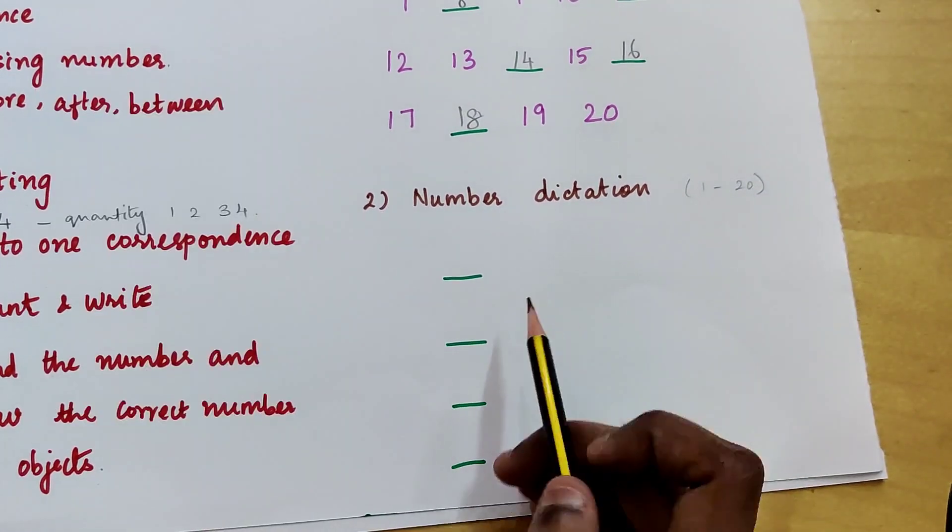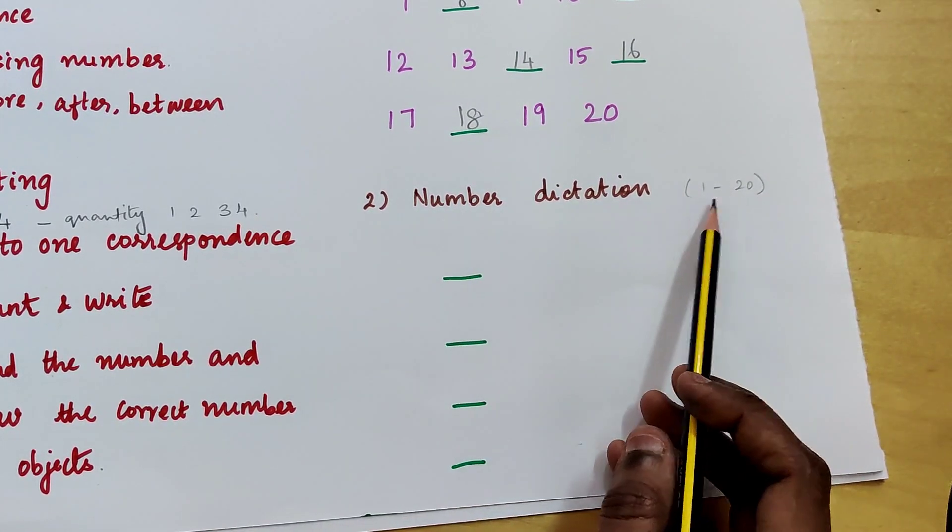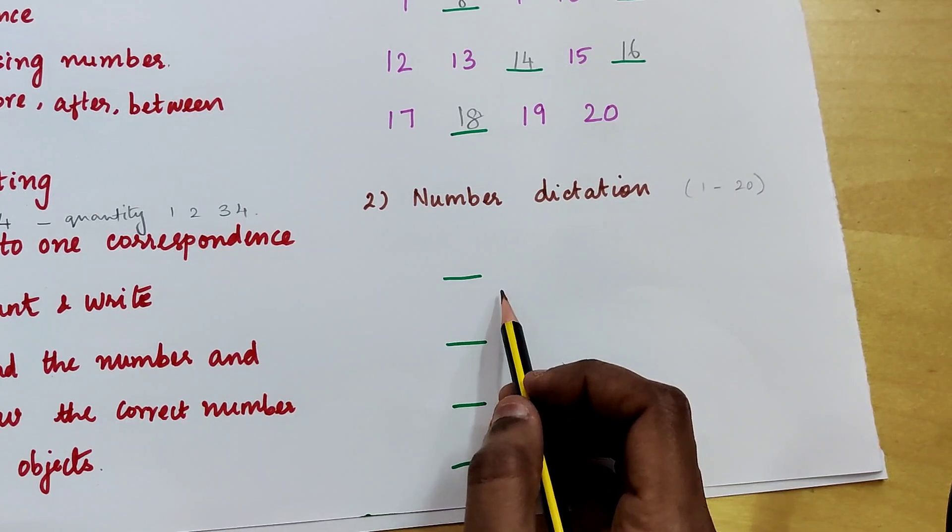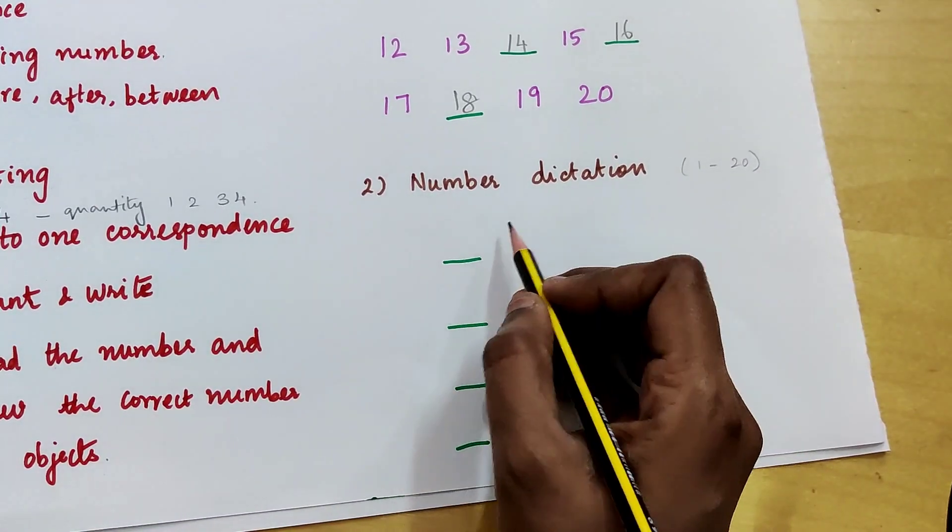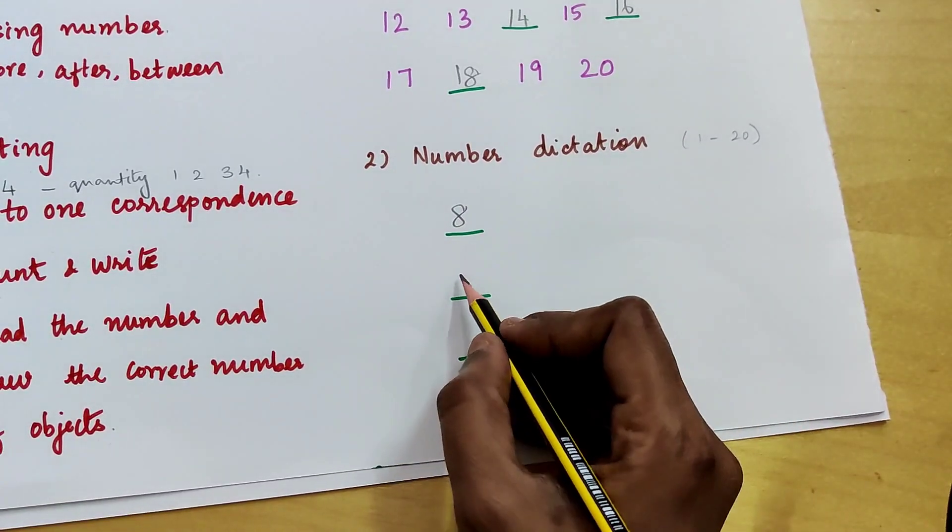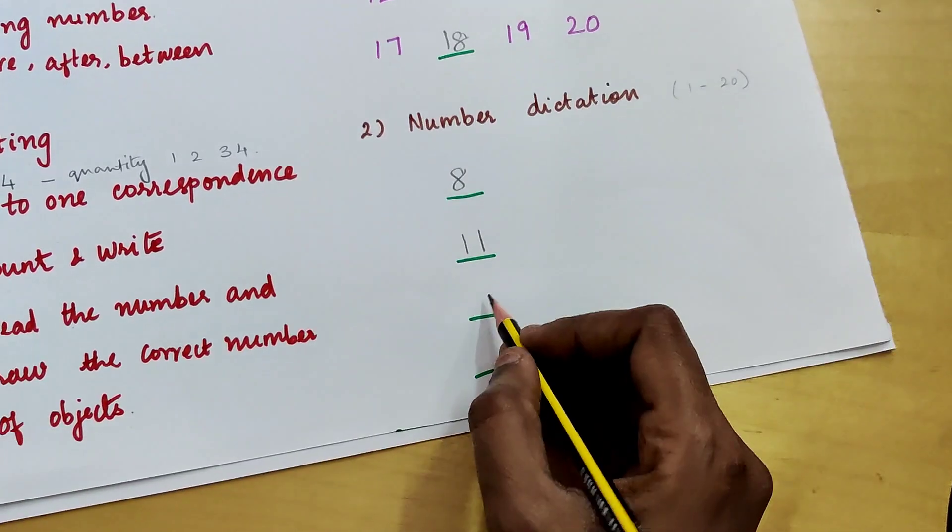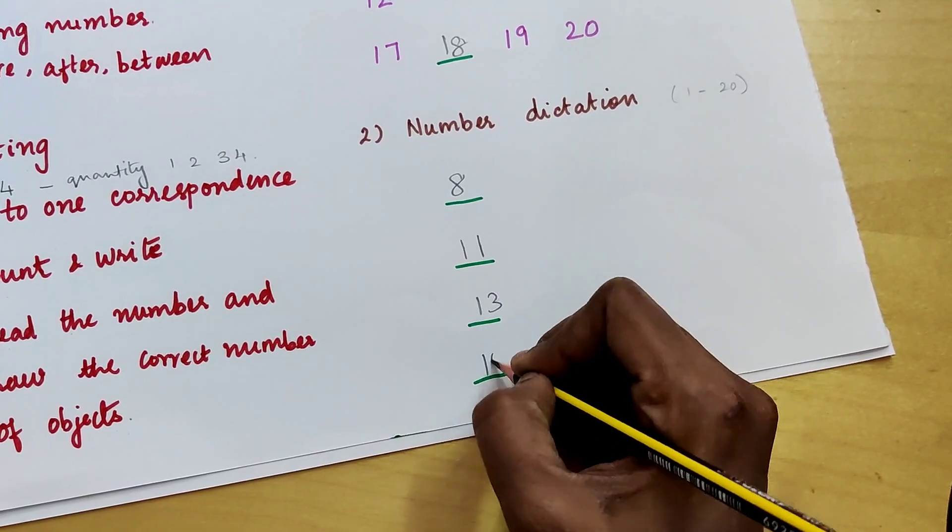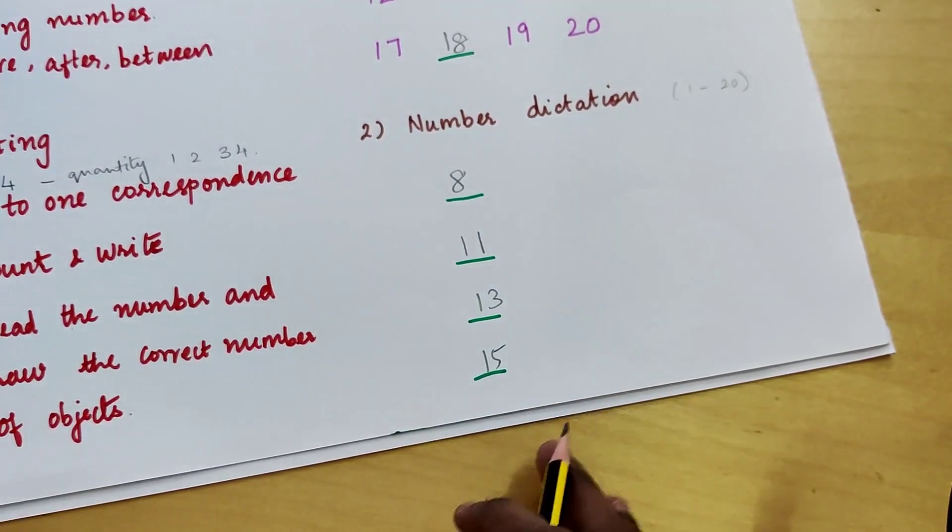Second one is we can dictate the number and they have to write the correct number. Say we can say 8, they have to write 8, like 11, 13, 15. So when we dictate the number, they have to write it.